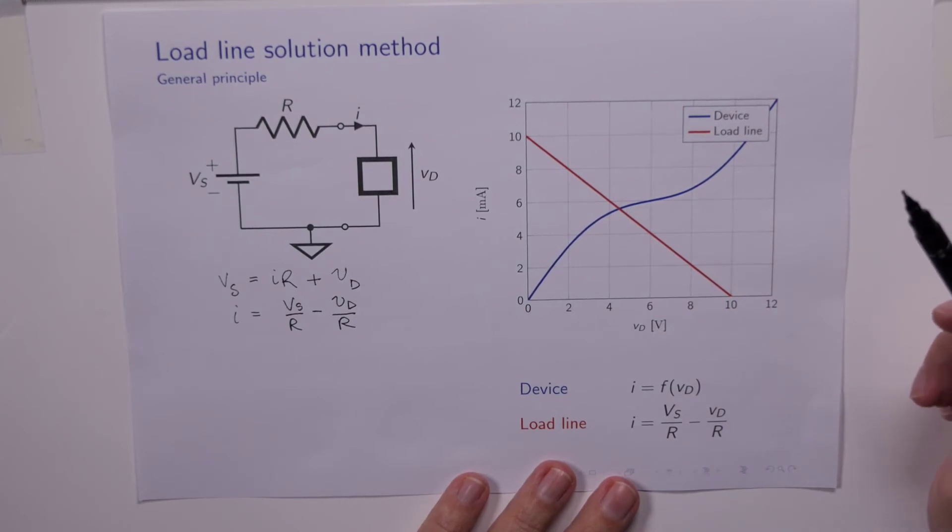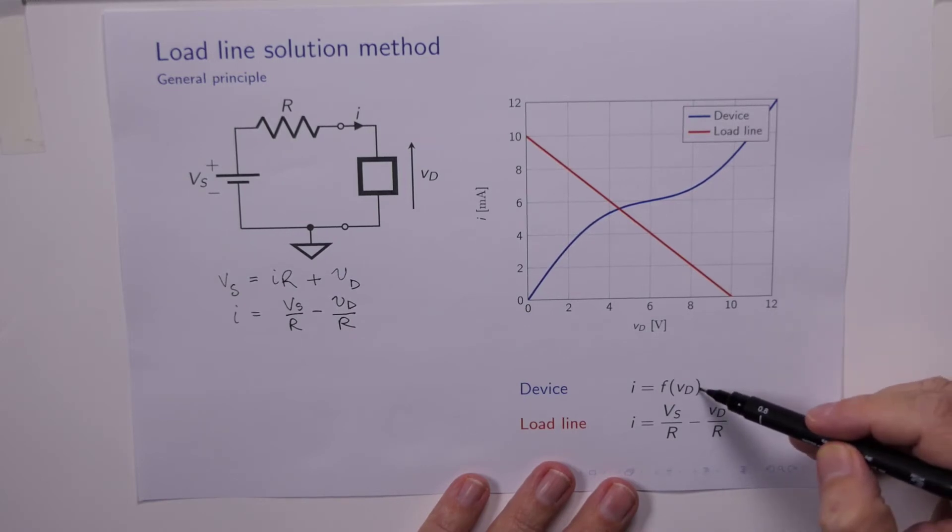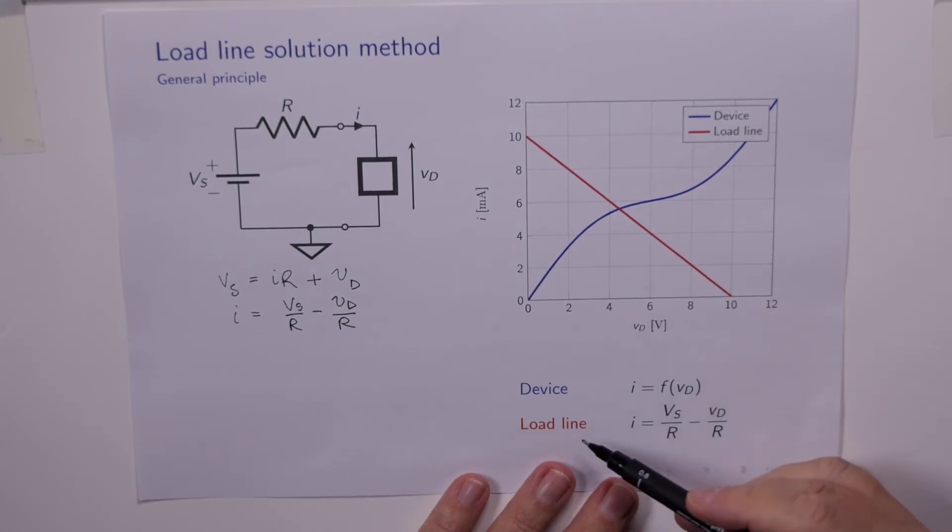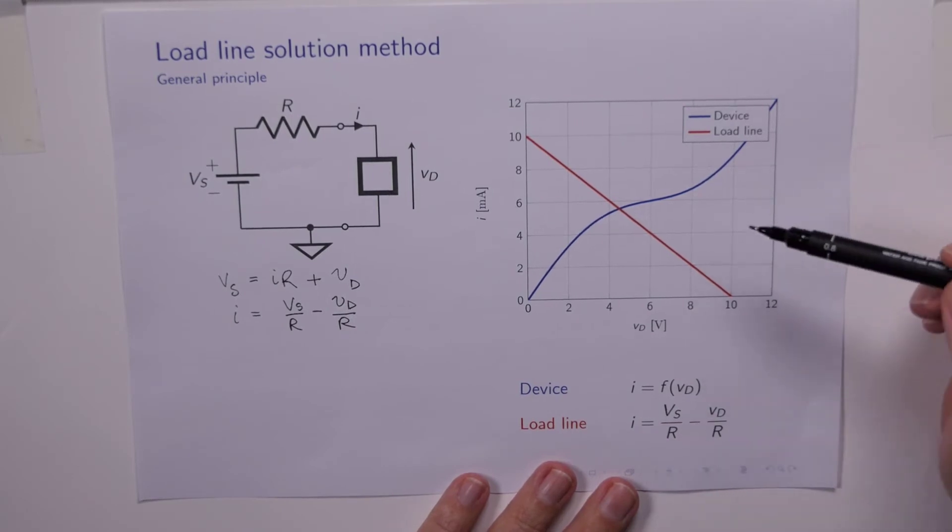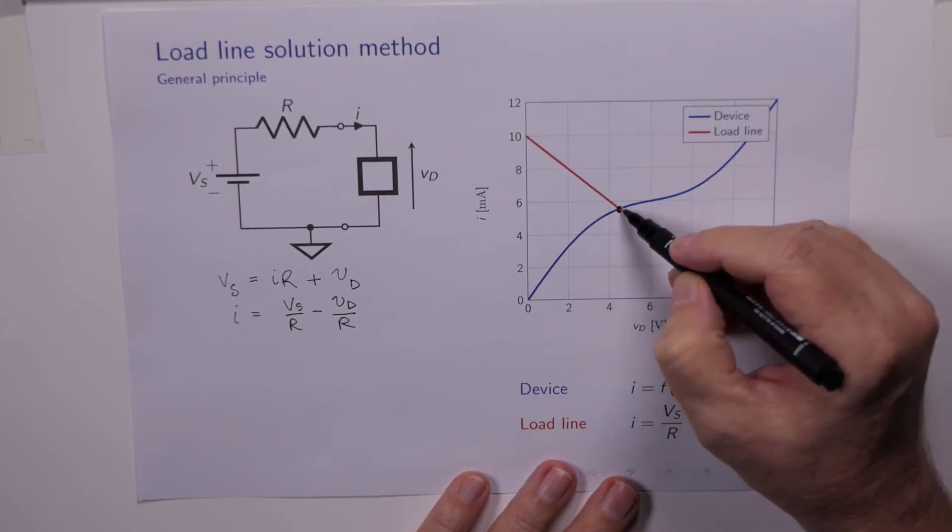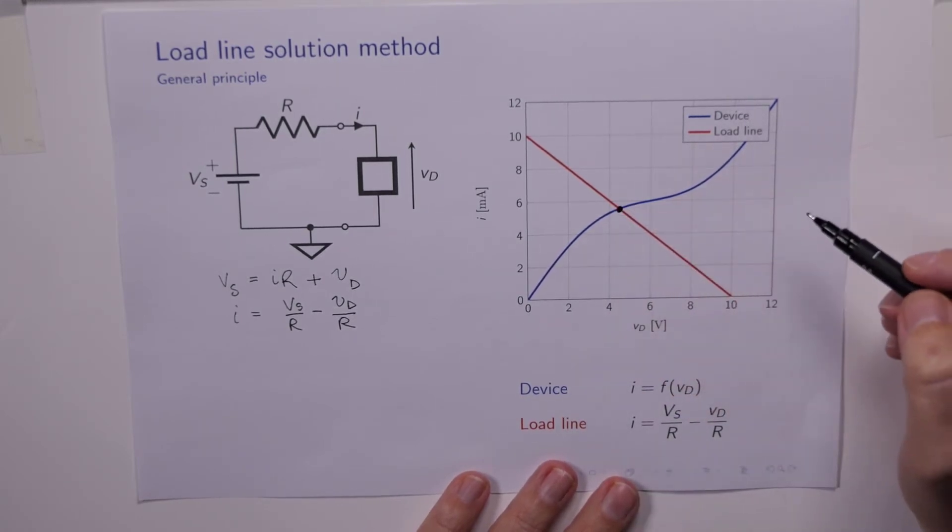It's pretty clear that if the device has a terminal characteristic given by this equation here, I equals some function of Vd, and the load line I is given by this simple linear equation, what we want is the solution to these two equations, the simultaneous solution. Because obviously the current is the same for both of them, and so we want to find out what that is.